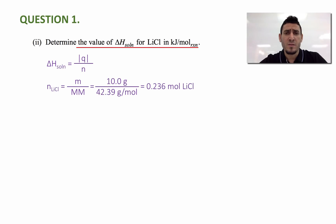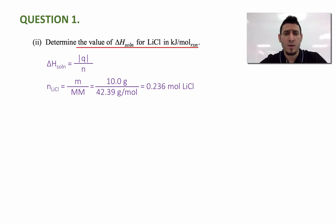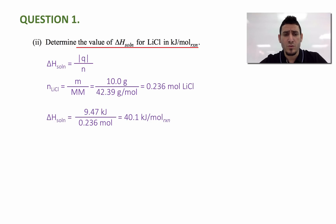The number of moles can be calculated from the expression mass over molar mass. In this case, we have 10.0 grams of lithium chloride, and the molar mass of lithium chloride is equal to 42.39 grams per mole, giving 0.236 moles of lithium chloride. A note on significant figures: 10.0 is 3 significant figures, and 42.39 is 4 significant figures, so the answer should be in 3 significant figures, giving 0.236. Now we can divide the heat from the previous part, 9.47 kilojoules, by 0.236 moles, giving 40.1 kilojoules per mole.